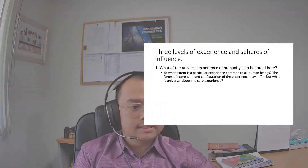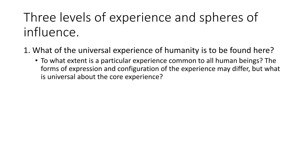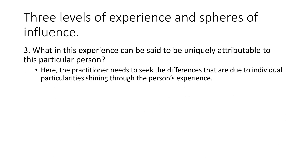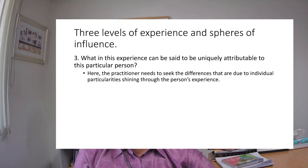Now, there are three levels of experience and sphere of influence. The first one is: what of the universal experience of humanity is to be found here? To what extent is a particular experience common to all human beings? The forms of expression may differ, but what is universal about the core experience? The second one is: what is culturally determined about this way of thinking, feeling, or behaving? The task is to figure out what in the experience is a function of social and cultural forces — such as child-raising practices, socialization, gender and role expectations, and the processes and ideologies of racialization. And the third one is: what in this experience can be said to be uniquely attributable to this particular person? The practitioner needs to see the differences due to individual particularities shining through the person's experience.